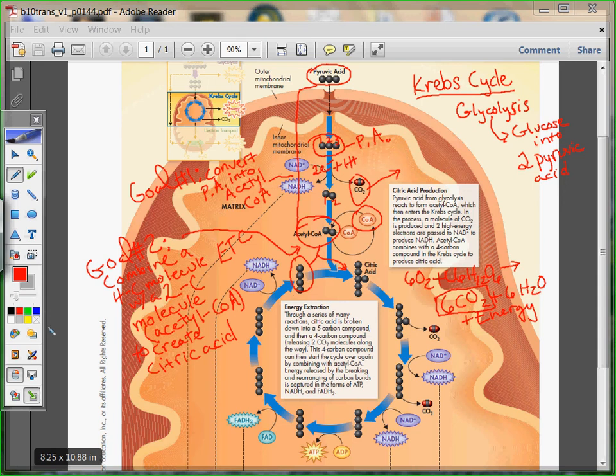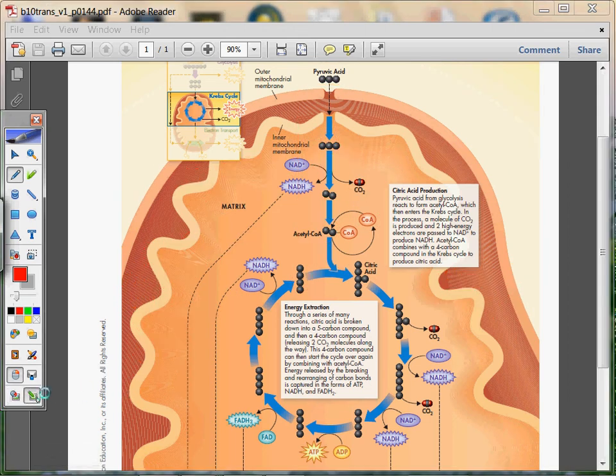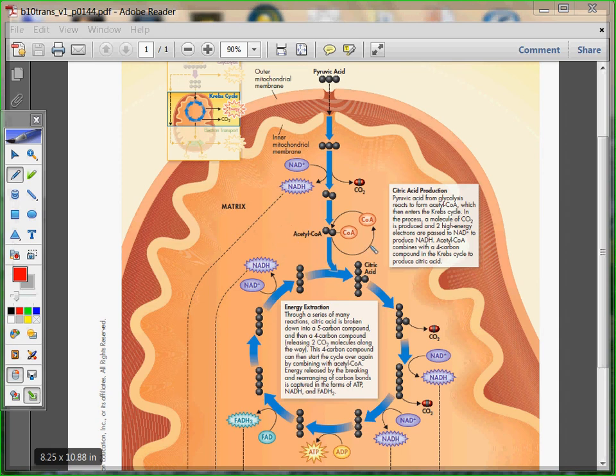From there, we will actually take citric acid, the citric acid that we created, and we will extract energy. So, that's goal number three, is energy extraction in the form of NADH, FADH2, and ATP.